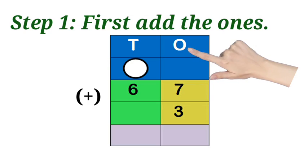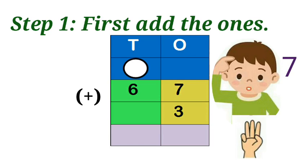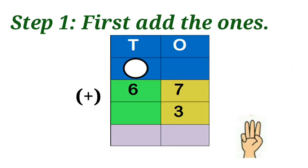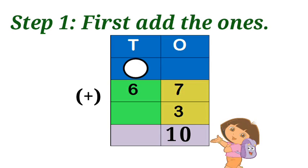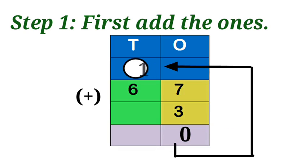Next see the sum. First add the ones column. Seven in the mind, three in the finger. Seven after adding plus three, what is the answer? Ten. The answer is ten. Ten is a two-digit number. So use the regrouping method. Write zero in the ones column. Carry over one to the tens column.